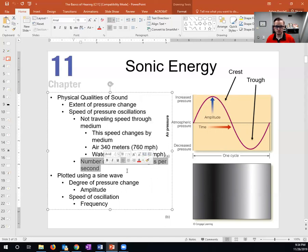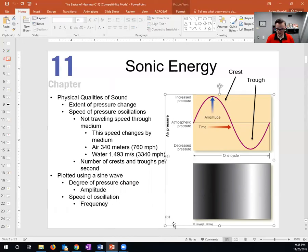When I talk about the speed of pressure oscillations, I'm talking about the number of crests and troughs per second. When we plot these two qualities of sound, these physical qualities of sound—extent of change and speed of change—they represent the amplitude of the wave, so the height of the crests and the depth of the troughs, and the frequency, how quickly it oscillates within a given amount of time. So those are the physical qualities of sound.